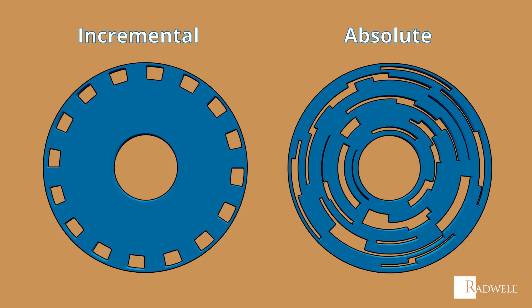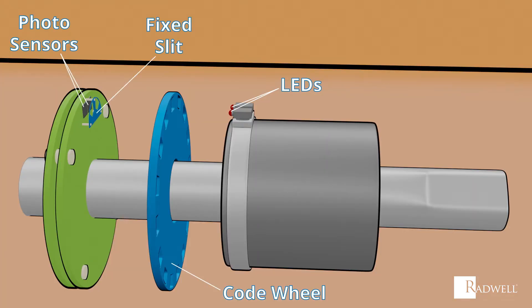An incremental encoder will have one row of slits in the code wheel, while an absolute encoder will have multiple rows. A fixed slit may be positioned behind the code wheel to allow the encoder to determine the direction of the rotation, either clockwise or counterclockwise.